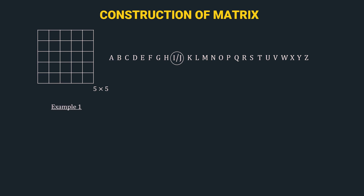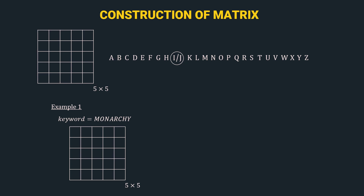In example 1, the keyword is 'monarchy' and here we have our 5x5 matrix. Step 1 is to input all the unique letters in the keyword in the order in which they appear. So we start with M, O, N, A, R, C, H, and Y.